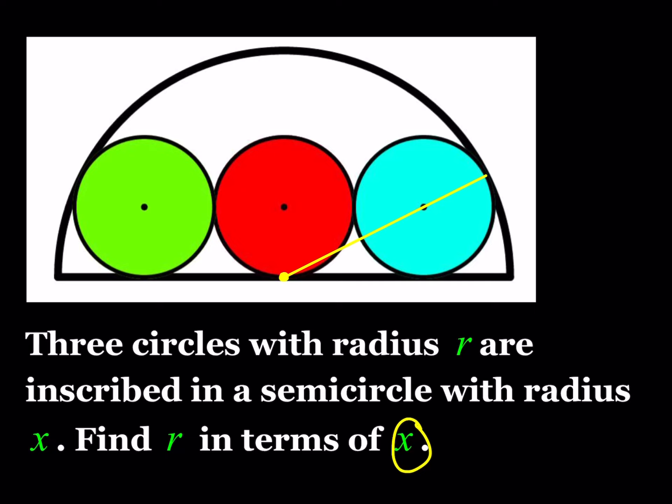What about the radius of the circle? It's given as r. So since this length is r, then if you subtract that from x, you're going to be getting x minus r. So this length is x minus r.